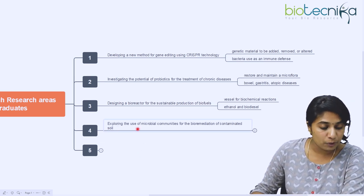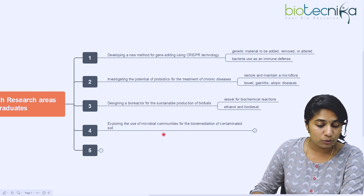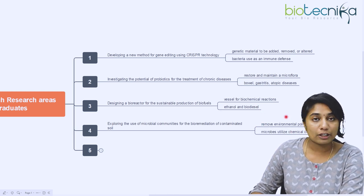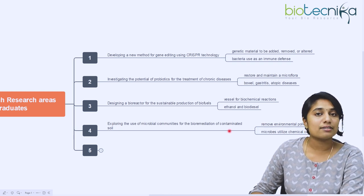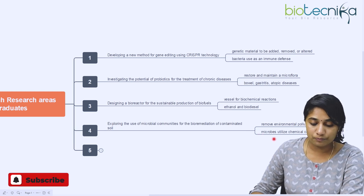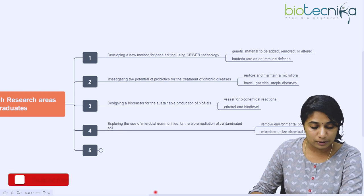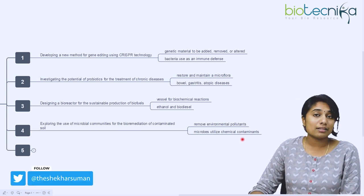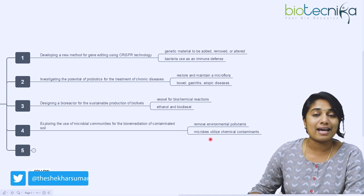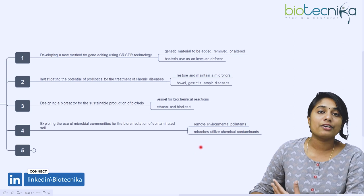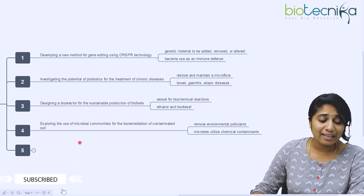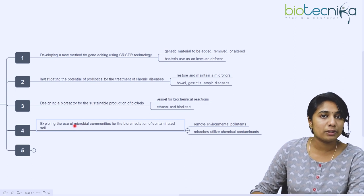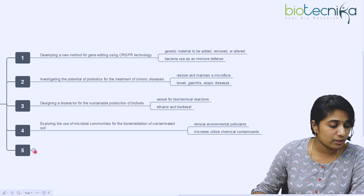The fourth topic is exploring the use of microbial communities for bioremediation of contaminated soil. Bioremediation is the use of microbes to remove environmental pollutants in contaminated soil. These microbes utilize the chemical contaminants present as pollutants in the contaminated soil. The microbes use those pollutants as their energy source for their own growth. That is how you can remove these pollutants from soil using microbes, and this process is called bioremediation.